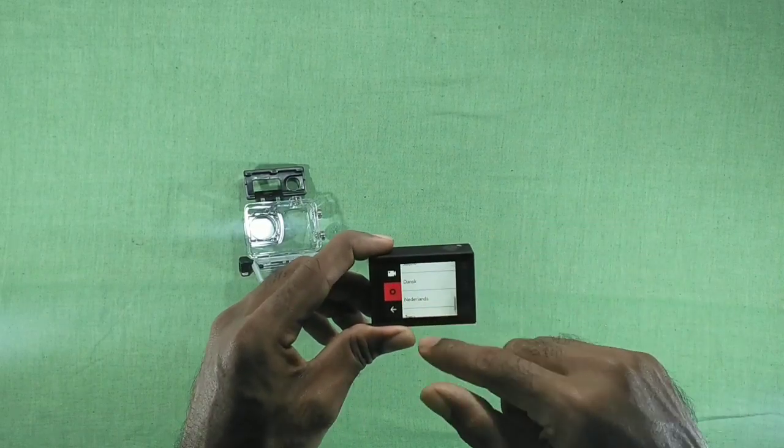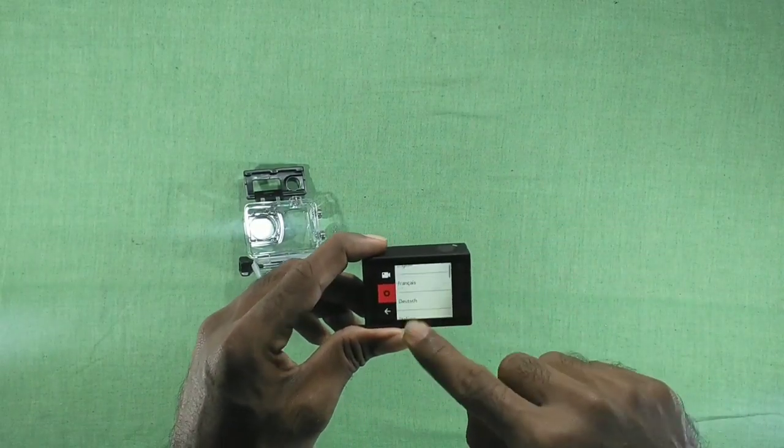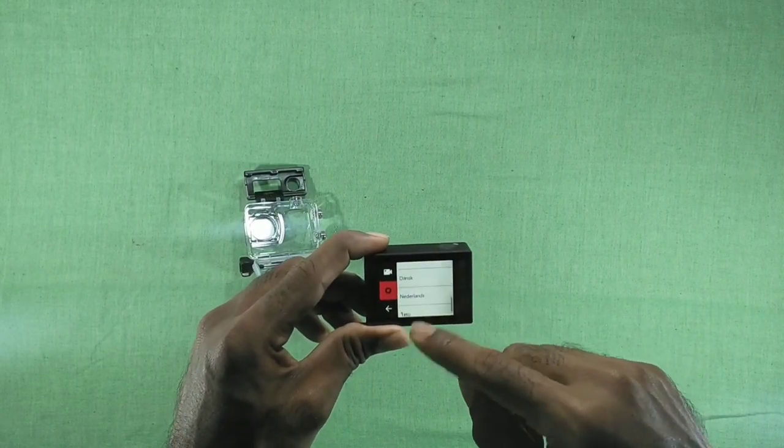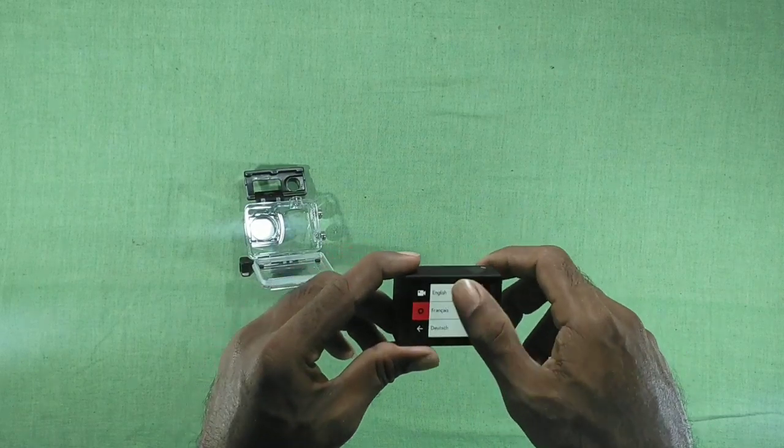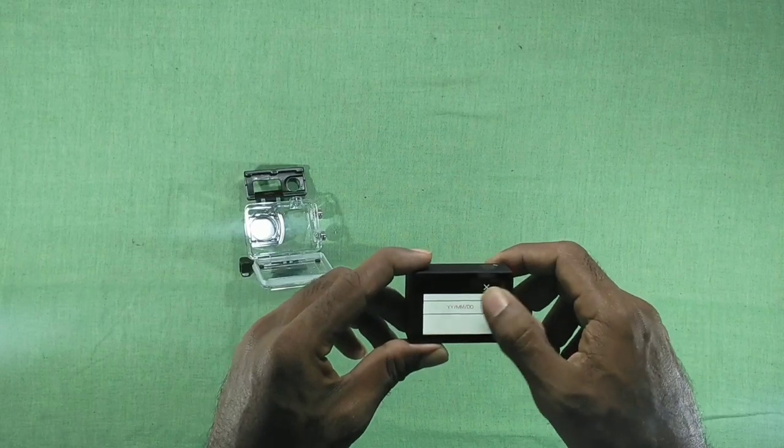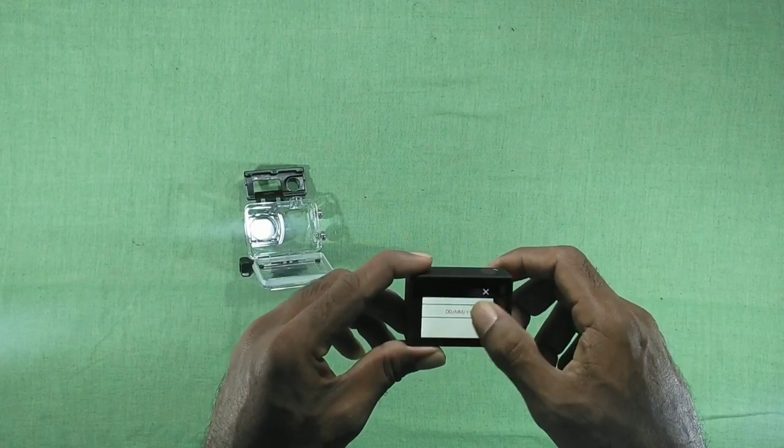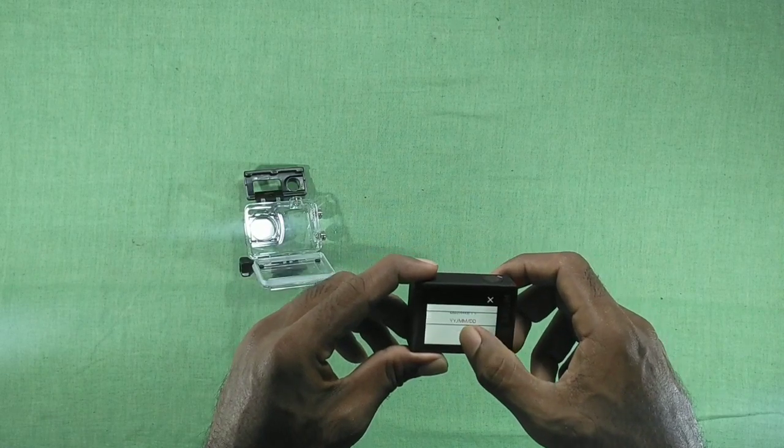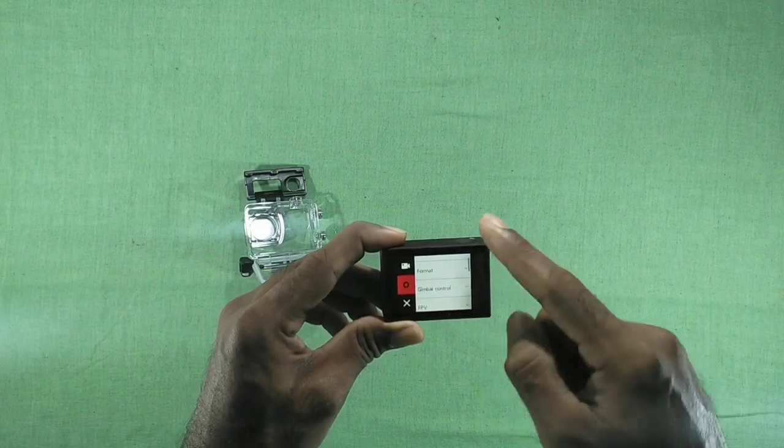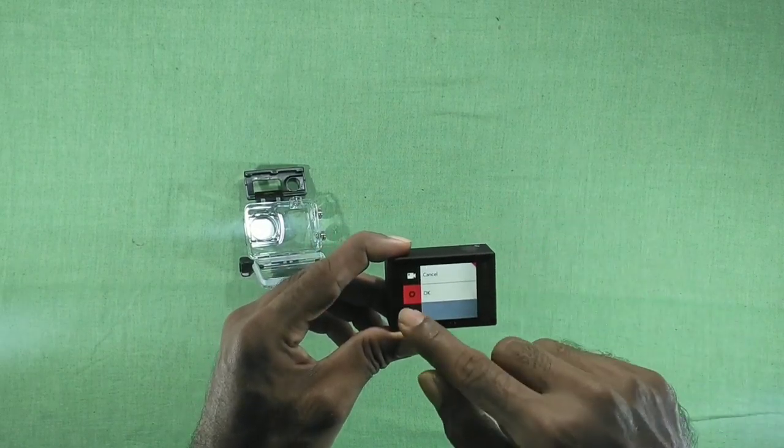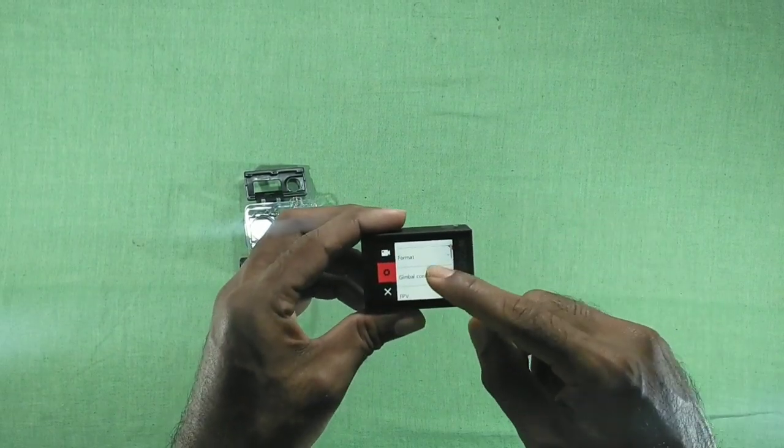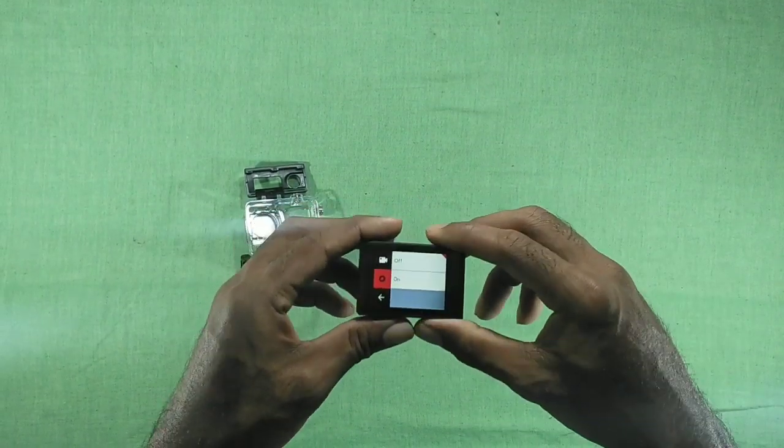We also have a couple of languages in the camera like English, French, Dutch, and so on, so we can easily choose our language. We also got the time and date settings so we can change the time and date according to our preferences. We also got a gimbal control—maybe we're getting some advantages while using a gimbal. With this mode enabled, maybe we're getting some extra stability for the videos.